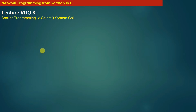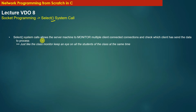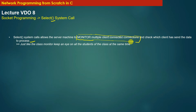The next thing we will discuss is the select system call. The select system call allows the server machine to monitor multiple client connections and check which client has sent data to the process. It is used to monitor multiple clients already connected with the server, and the server keeps monitoring those connections to check which client has sent data and which client needs a service.